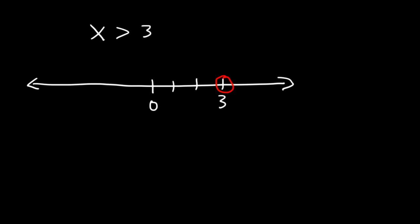So x is greater than 3. If it's greater than, shade towards the right. So this is the answer used on a number line — that's how you graph it.